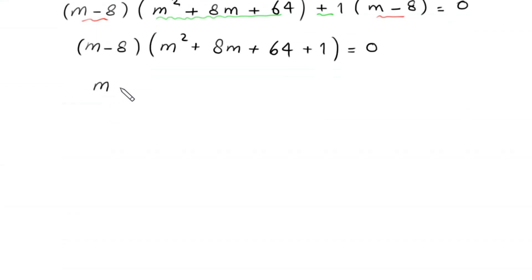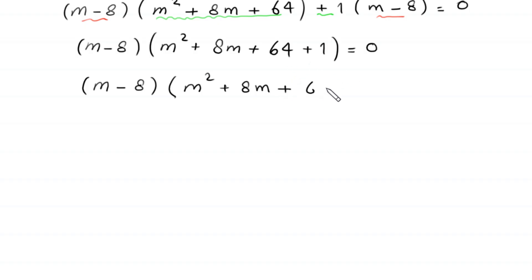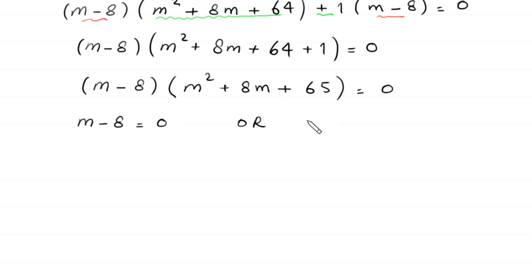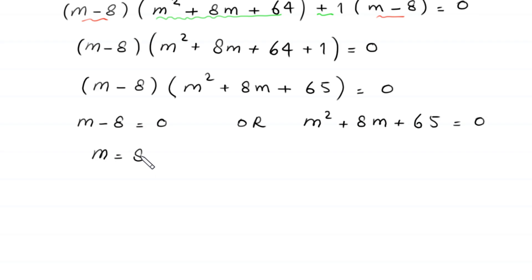From this factored form, either m - 8 = 0, giving m = 8, or the quadratic m² + 8m + 65 = 0 must be solved.